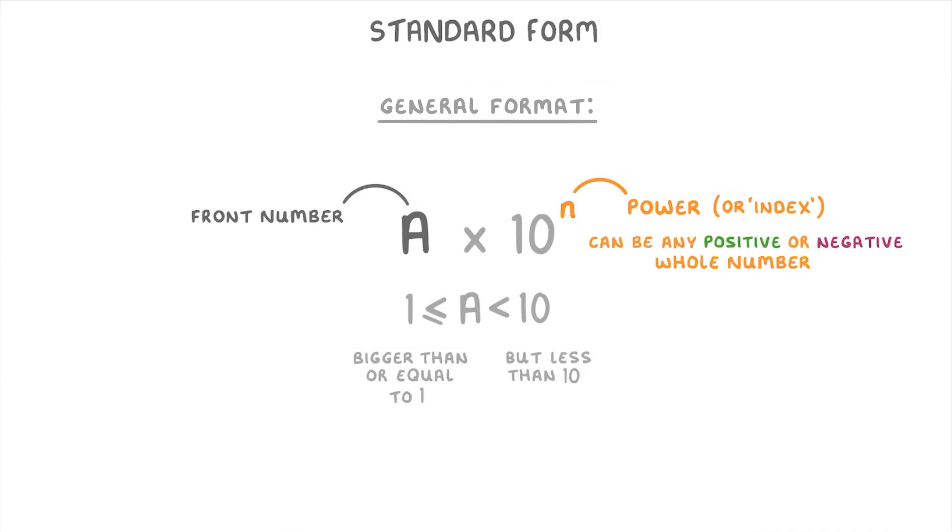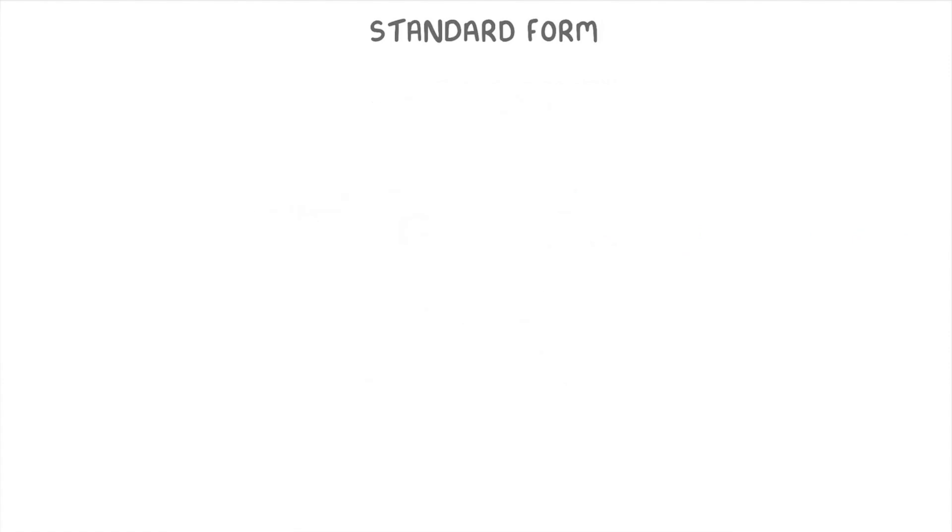To see what I mean, let's take a look at these four numbers and see if each of them are in standard form or not. The first one, 4.5 × 10^4, is correct standard form because the front number 4.5 is between 1 and 10, and the power or index of 4 is a whole number.